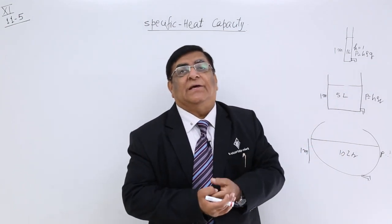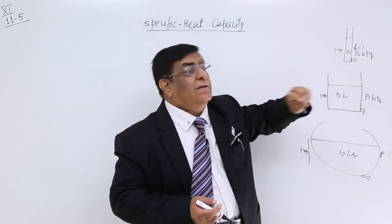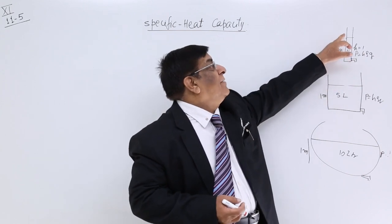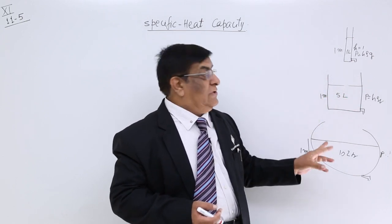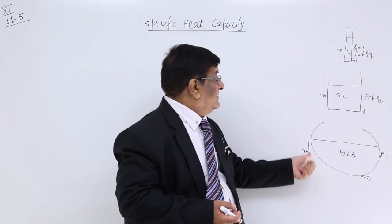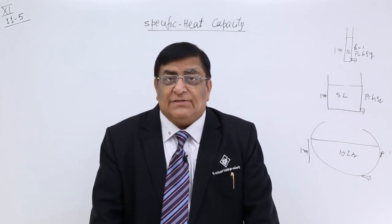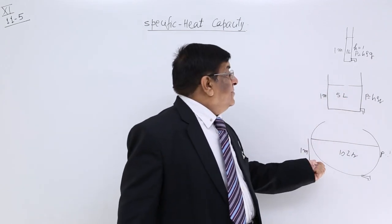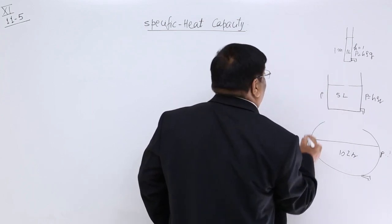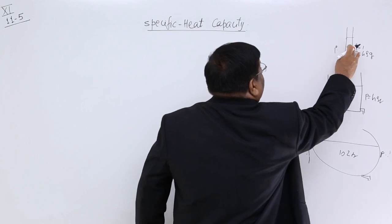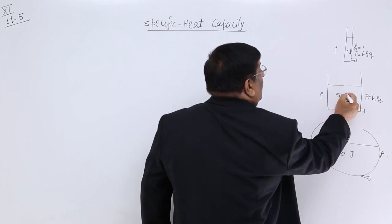The same thing happens in heat energy. If my container is like this, only 1 Joule will rise the temperature by 1 degree. My container like this needs 5 Joule, and here my container needs 10 Joule. So this is the difference — everywhere I am getting a temperature rise of 1 degree, but I have to give 1 Joule, 5 Joule, and 10 Joule of energy.